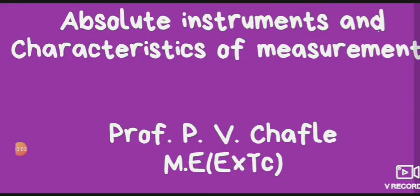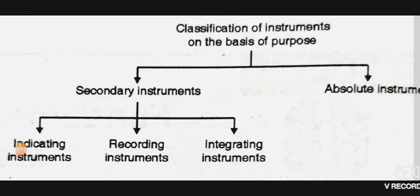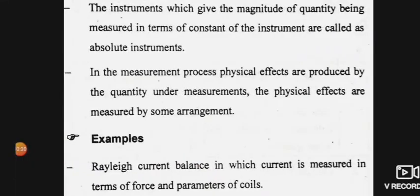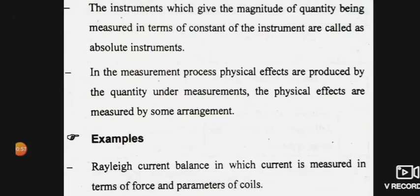Today we see the next topic: absolute instruments and characteristics of measurement. We already covered the classification of instruments and the secondary instrument portion. Today's lecture covers the absolute instrument. The instruments which give the magnitude of the quantity being measured in terms of constants of the instrument are called absolute instruments, where measurement is expressed in constant form.